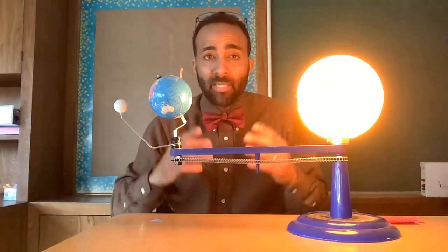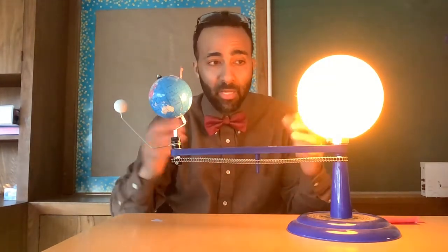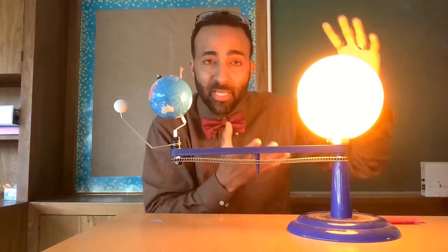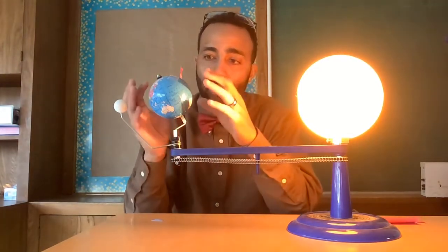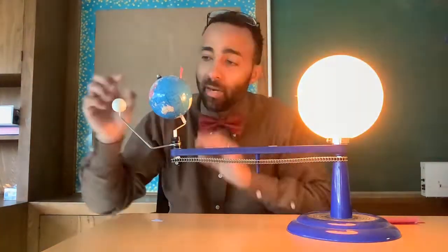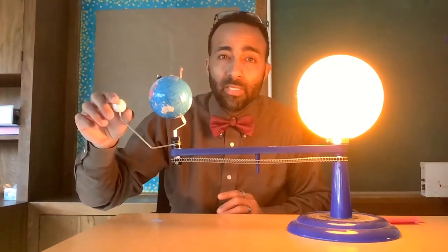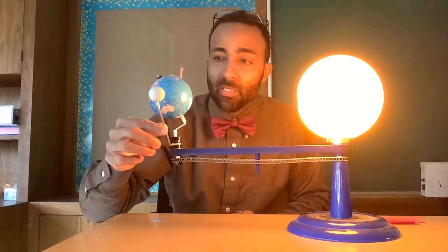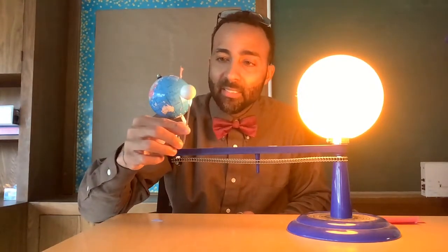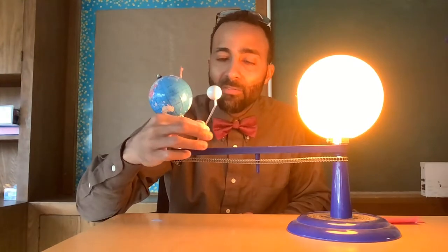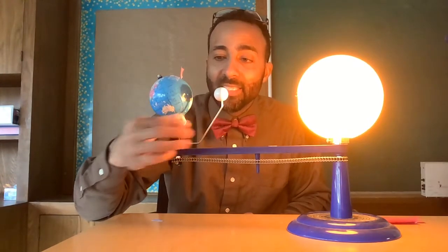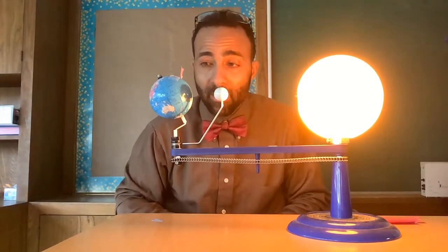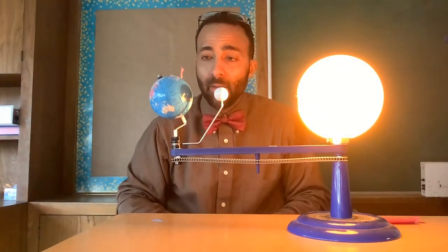Another characteristic that makes them different is the sun is larger, as we've said many times. The earth is smaller, and then the moon is the smallest out of all of them. The moon is one-sixth the size of the earth. Another way of saying that is the earth is six times larger than the moon.